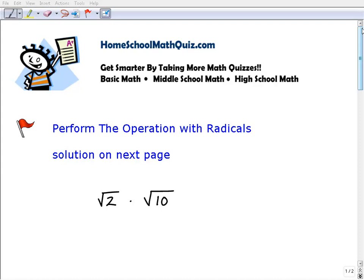So the question is asking: perform the operation with the radicals. Okay, so you have the square root of 2 times the square root of 10.